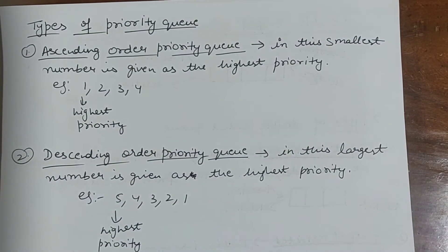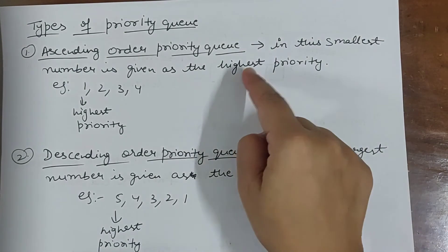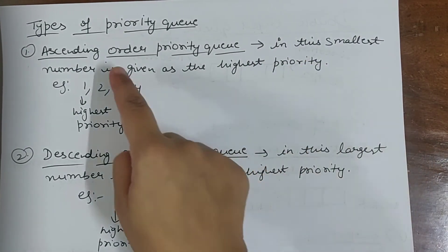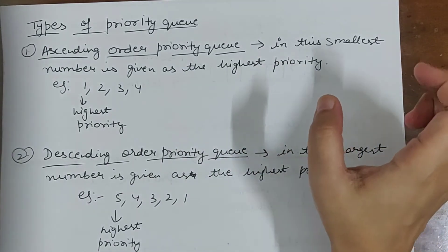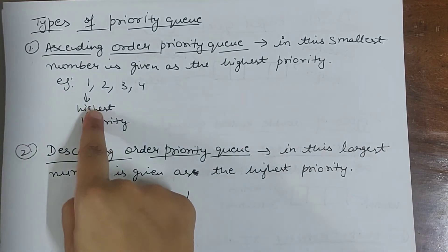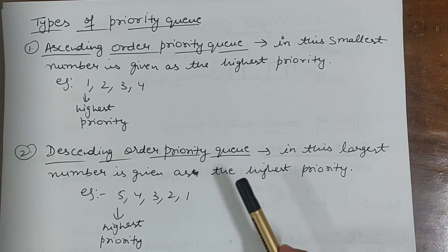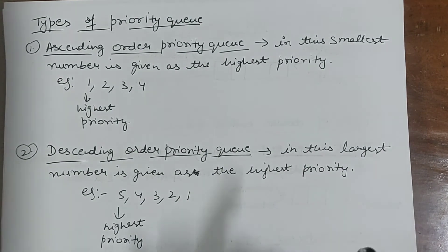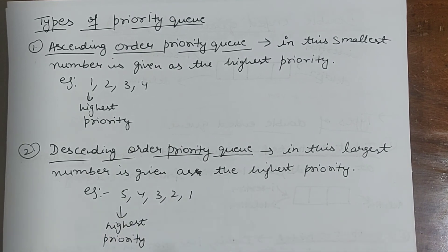Types of priority queue: First is ascending order priority queue, in which the smallest number is considered as having the highest priority. So the smallest number means high priority — priority 1 is highest, then 2, then 3, and so on. Second is descending order priority queue, in which the largest number is treated as the highest priority. So the larger the number, the higher the priority.